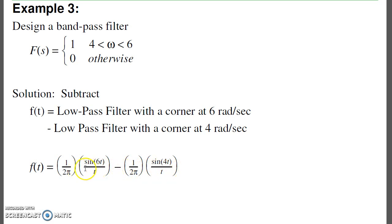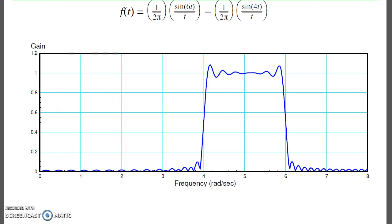And what you're left with is just the gain of 1 between 6 and 4. Take that impulse response, throw it in the previous MATLAB code, and you get this frequency response. Again, a very good bandpass filter passing frequencies between 4 and 6, rejecting other frequencies.